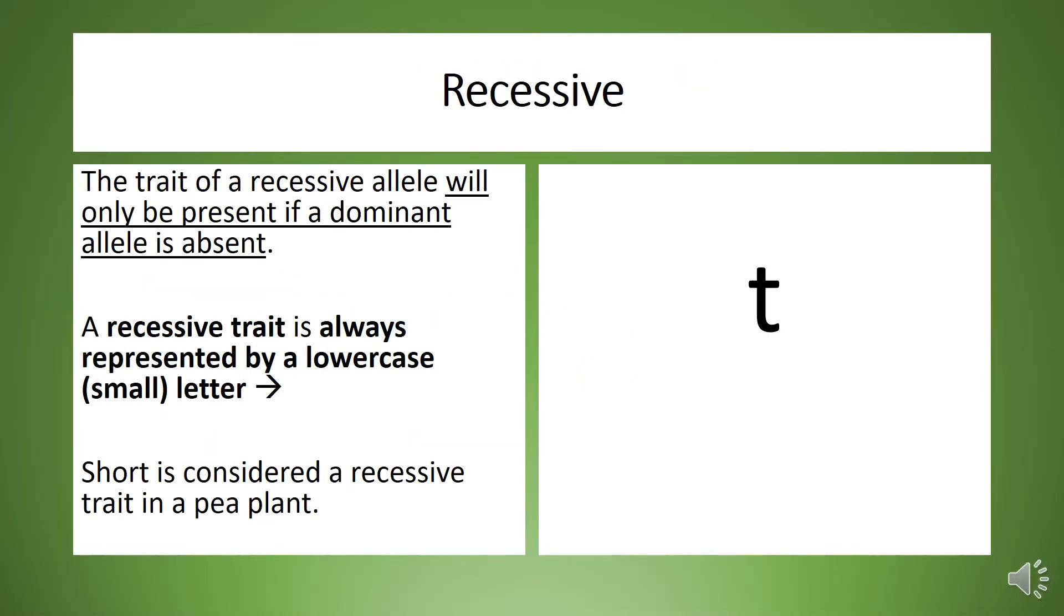The trait of a recessive allele will only be present if a dominant allele is absent. A recessive trait is always represented by a lowercase letter. Short is considered a recessive trait in pea plants.